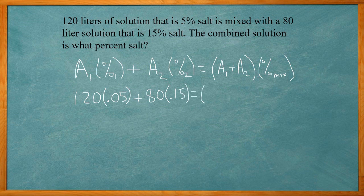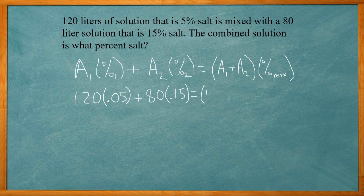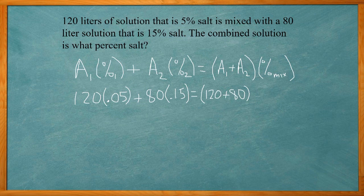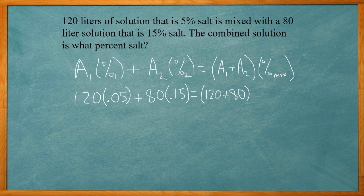So that's going to be equal to the two amounts added together, 120 plus 80. And then we don't know the final percent salt of the mixture. We're just going to use a variable. Let's just use x.